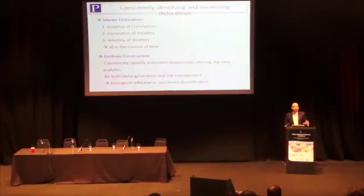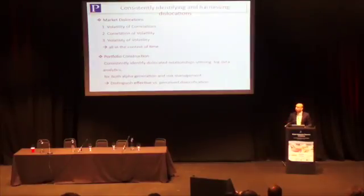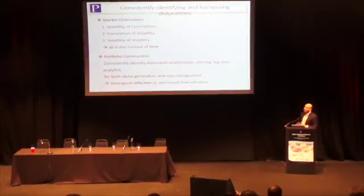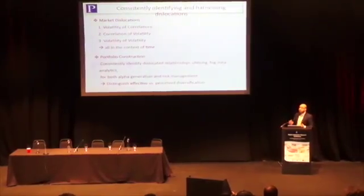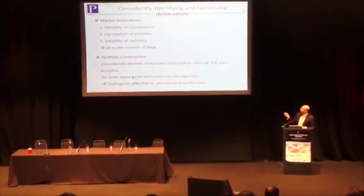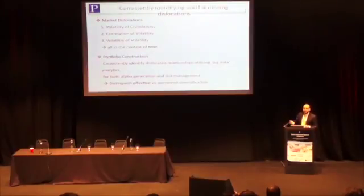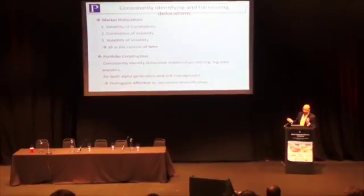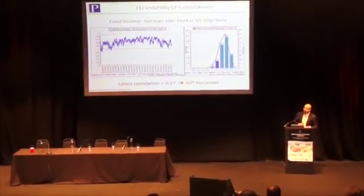With regard to how one then brings all these three forms of dislocations together for portfolio construction, the key aspect is really about consistency and being able to do so on a regular basis — so that one can identify those dislocations for alpha generation, but more importantly also for identifying risk concentrations and to distinguish effective versus perceived diversification.